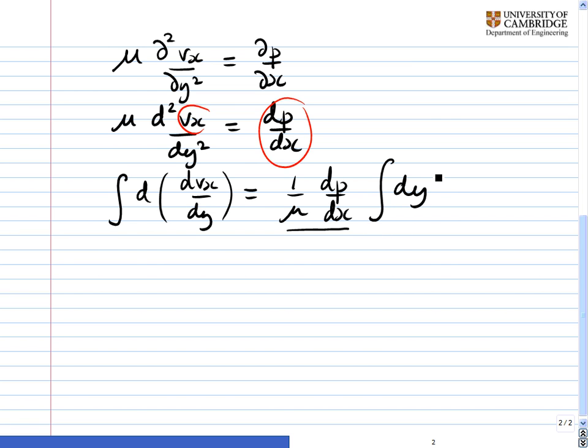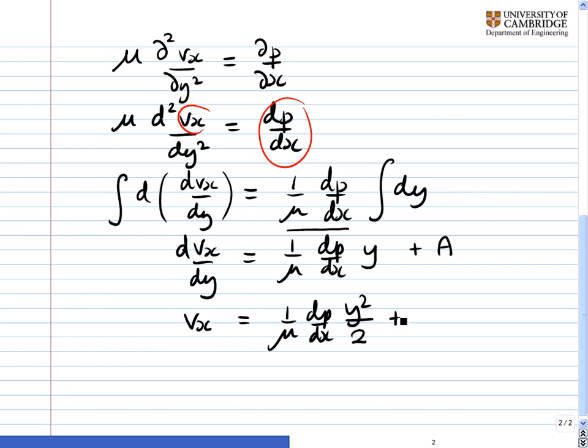So the next line will be the integral of d(dvx/dy) = (1/μ)(dp/dx)∫dy. I've pulled the (1/μ)(dp/dx) to the other side of the integral sign, simply because they're not functions of y. When we integrate this, it's very simple. On this side we get dvx/dy, and on this side we get (1/μ)(dp/dx)y. But we mustn't forget to add a constant, which is our constant of integration. Then we do this step again. We'll get vx = (1/μ)(dp/dx)(y²/2) + Ay + B, another constant of integration.